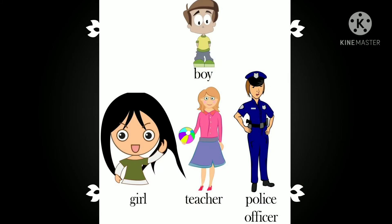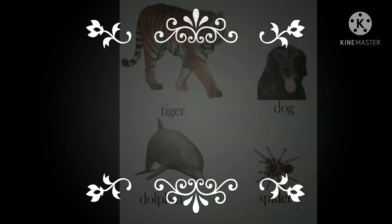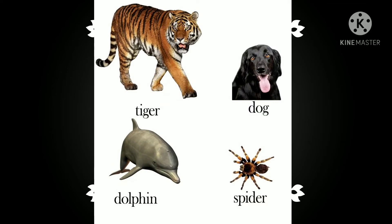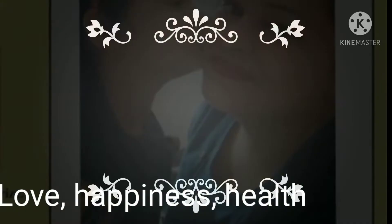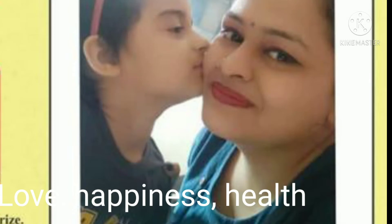Boy, teacher, girl, police officer — these are the names of different types of people. Next is tiger, dog, dolphin, spider — these are the names of animals. Park, school — these are the names of places. Love, happiness, health — these all are called nouns, that is naming words.